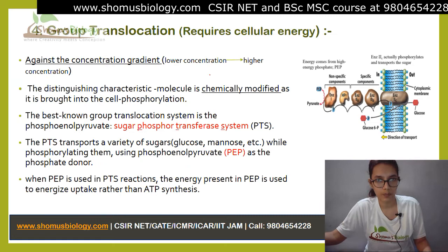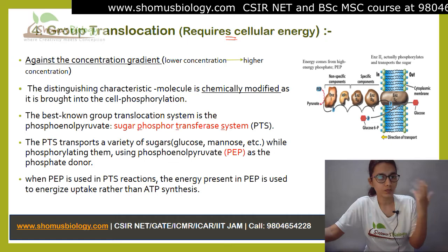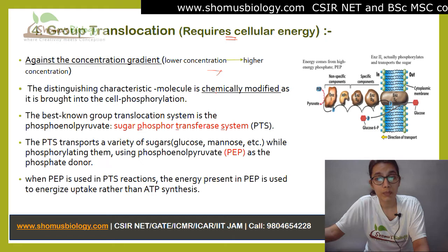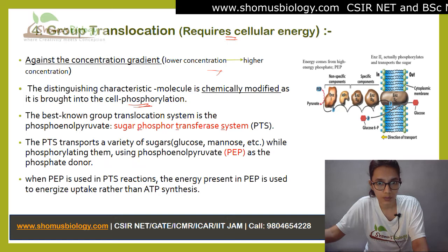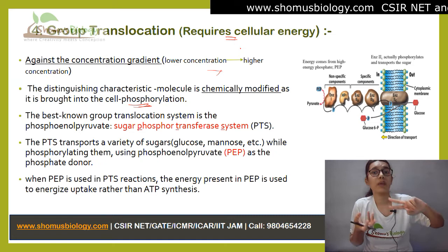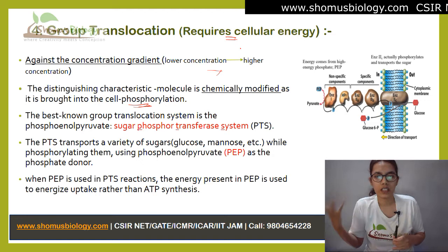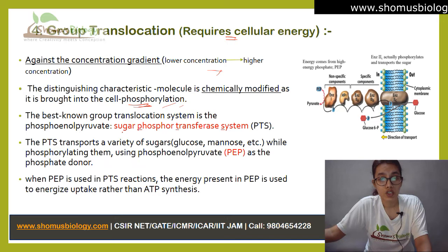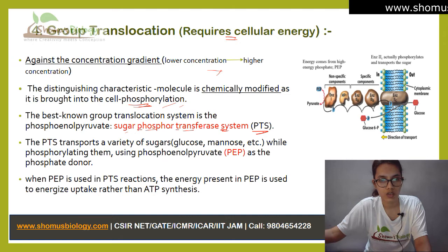The known example of the group translocation system is the sugar phosphotransferase system (PTS). It transfers sugars — which could be glucose, mannose, or any other sugar — while phosphorylating them. PEP (phosphoenolpyruvate) is the phosphate donor. The energy present in PEP is used to energize the uptake of the molecule rather than for ATP synthesis.